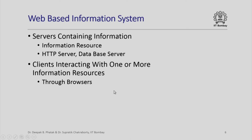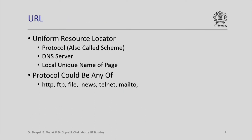Today we take all of this for granted, but it was not easy to conceive and implement such systems in the early days. A URL must specify a protocol, also called a scheme; it needs to specify a DNS server; and it needs to specify the unique name of the page. The protocol could be any one of HTTP, FTP, file, news, telnet, or mailto, as mentioned.